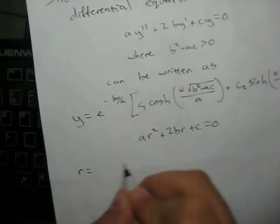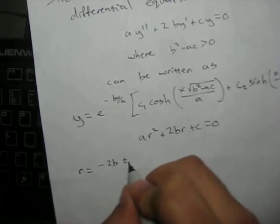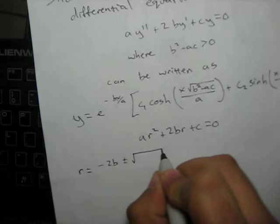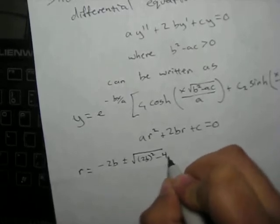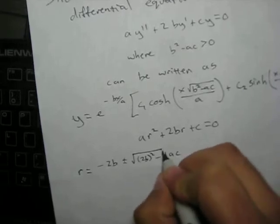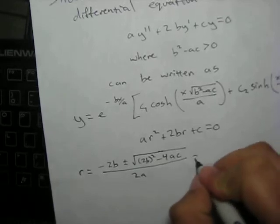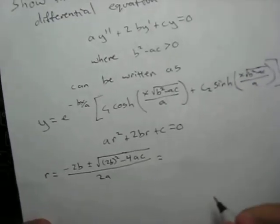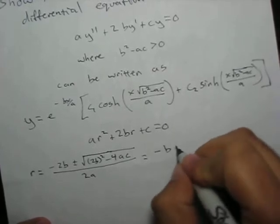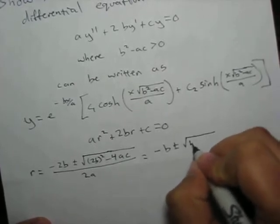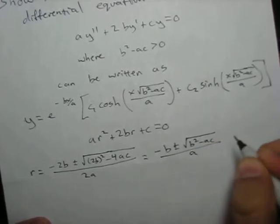The quadratic formula gives us r equals (-2b ± sqrt(4b²-4ac)) / (2a), which simplifies to r equals (-b ± sqrt(b²-ac)) / a.